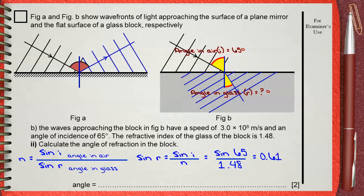But wait, this is not the final answer. 0.61 is sine of the angle of refraction, not the angle of refraction itself. That's why, by finding the inverse sine of 0.61, you get the angle of 37.8 degrees.